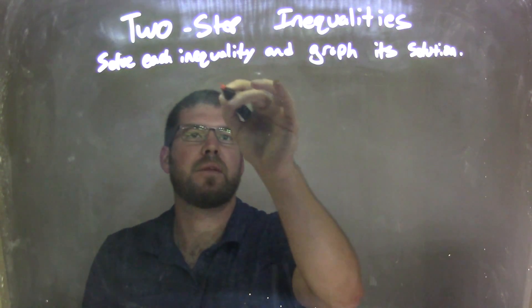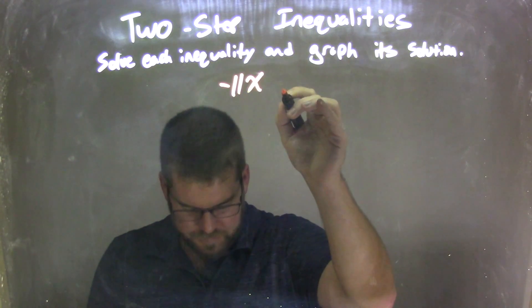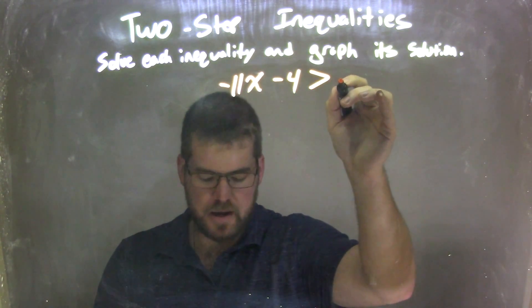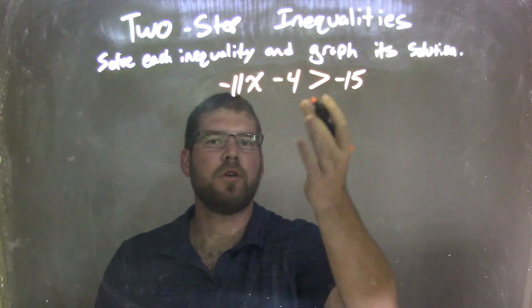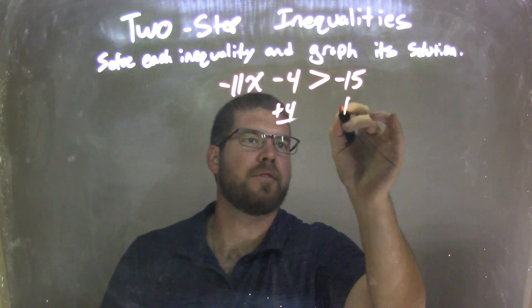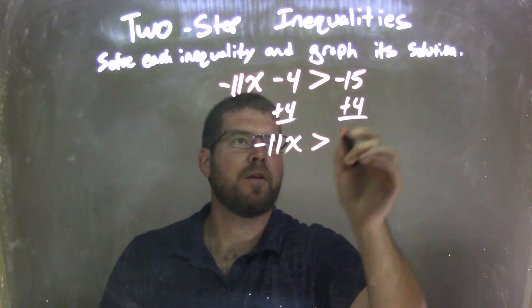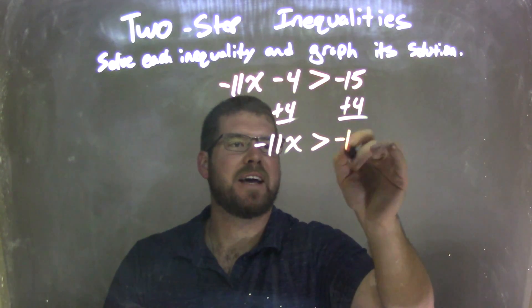So if I was doing this inequality, negative 11x minus 4 is greater than negative 15. First step, add 4 to both sides. That leaves me with negative 11x on the left, and it's greater than negative 15 plus 4, which is negative 11.